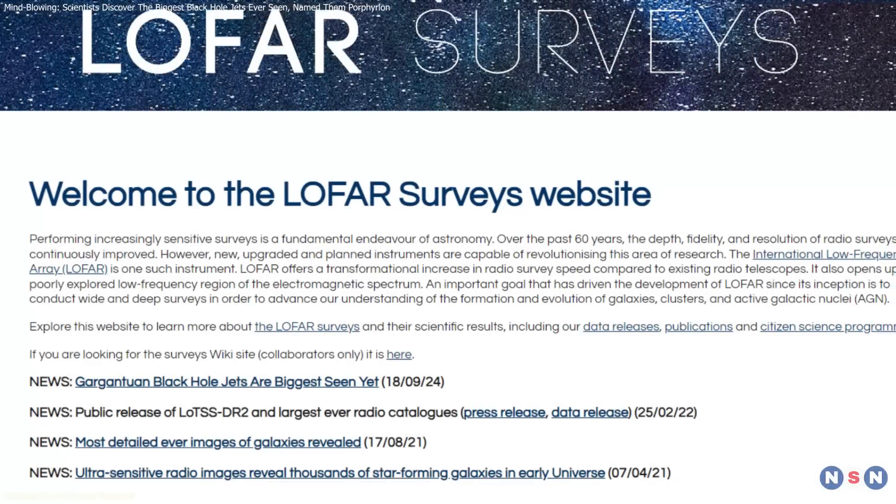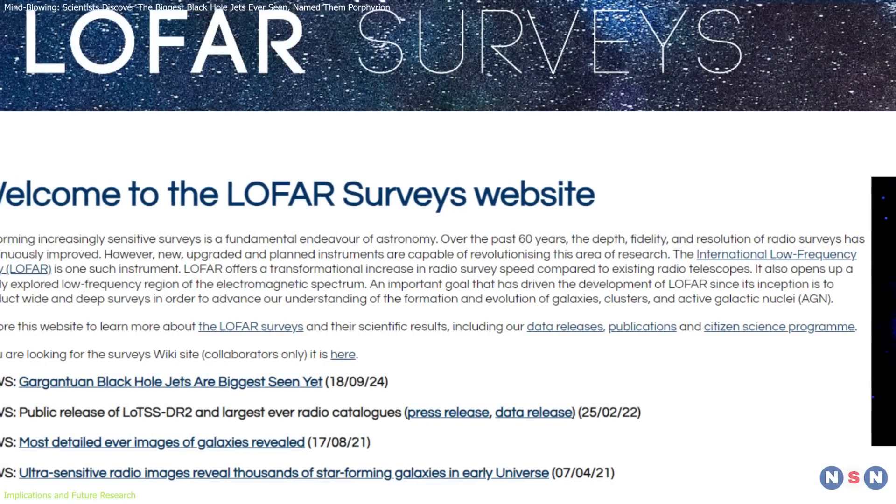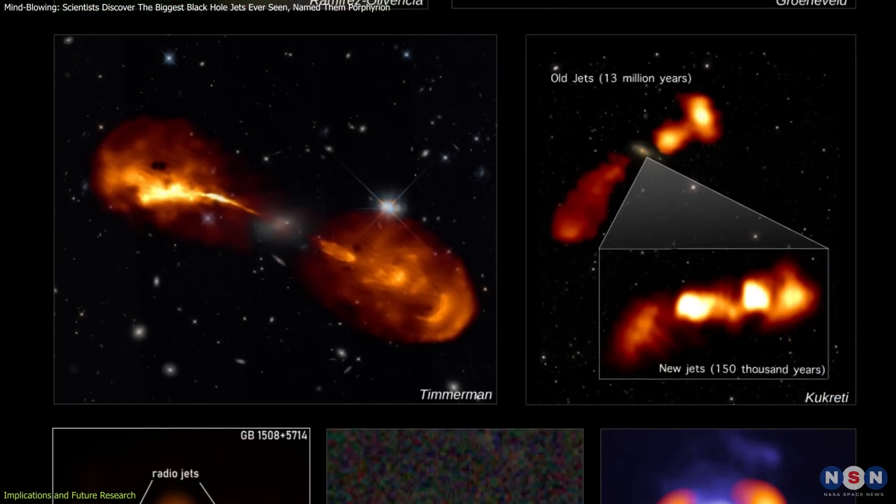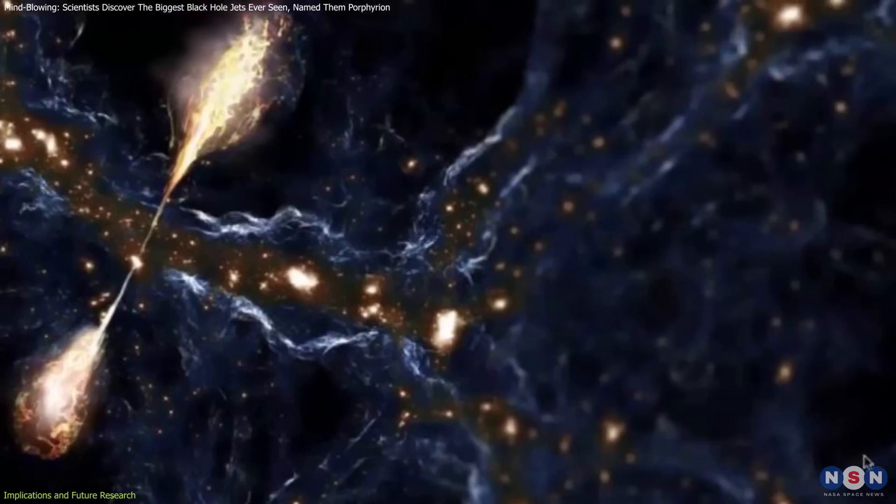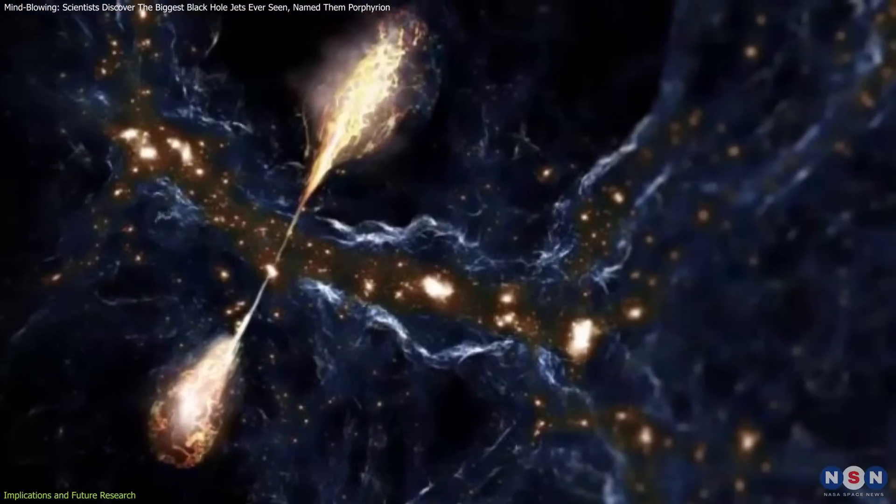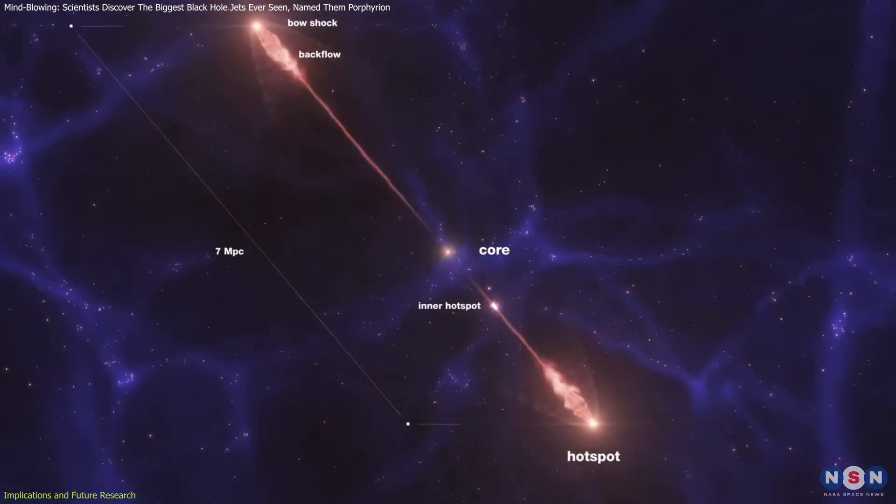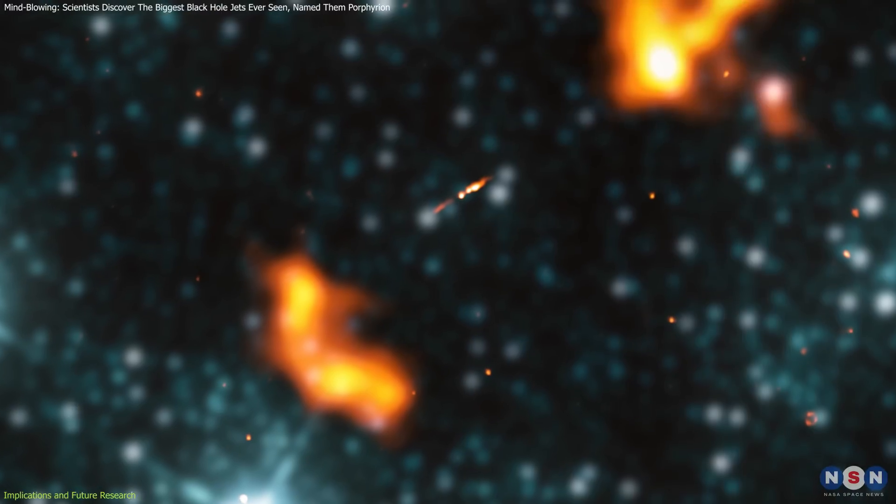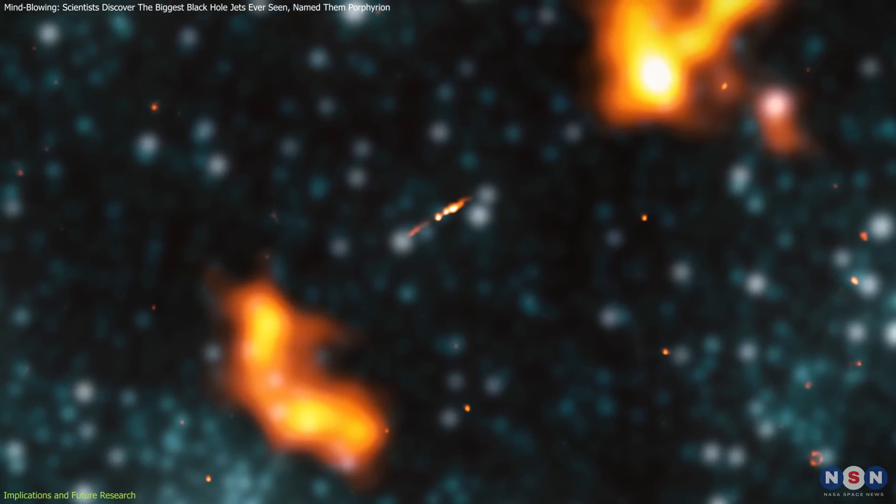The LOFAR survey that discovered Porphyrion covered only 15% of the sky, yet it identified over 10,000 giant jet systems, hinting that similar megastructures could be scattered throughout the universe. To put this into context, before Porphyrion's discovery, the largest known black hole jet system was Alcyoneus, which was identified in 2022.